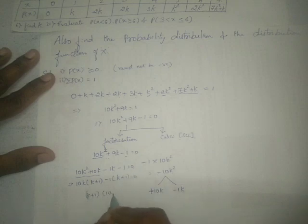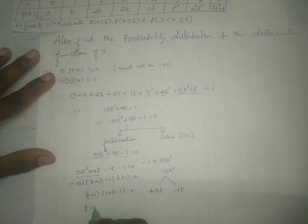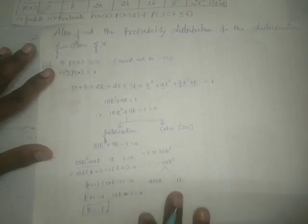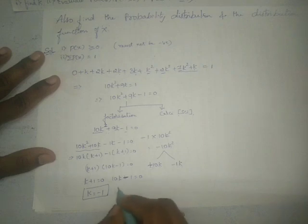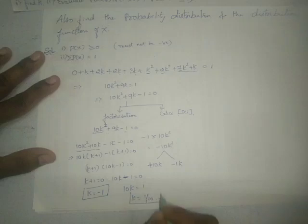After factorization we get K plus 1 equals 0, or 10K minus 1 equals 0. From the first, K equals minus 1; from the second, 10K equals 1, so K equals 1 by 10.